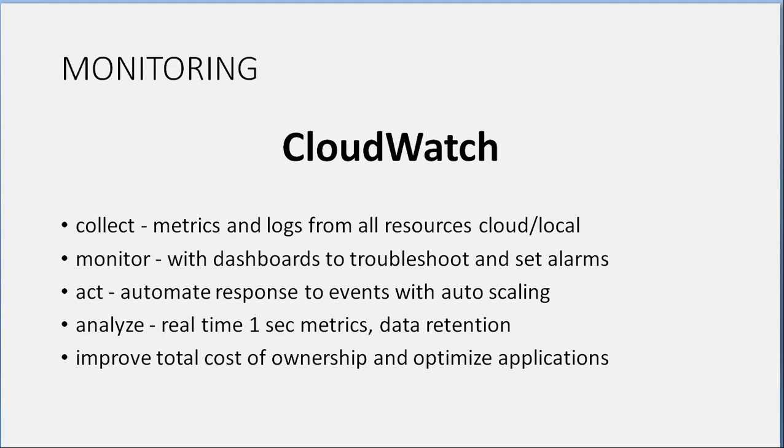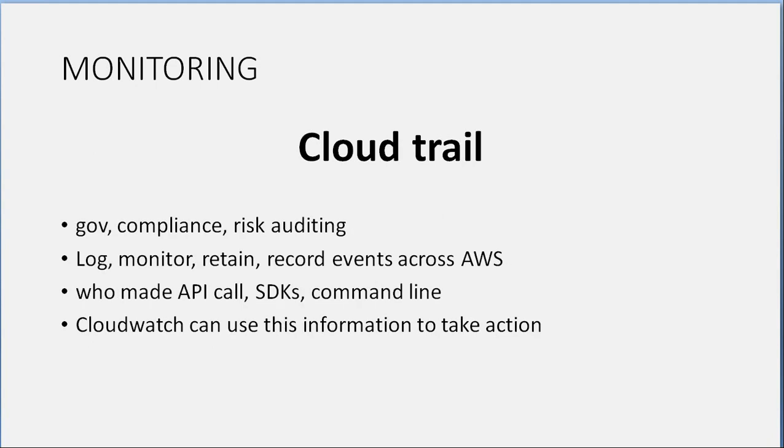CloudTrail: Government compliance, risk auditing — log, monitor, retain, and record events across AWS. Find out who made API calls via SDKs and the command line. CloudWatch can use this information to take action. Also helps with data retention, improving total cost of ownership, and optimizing applications.